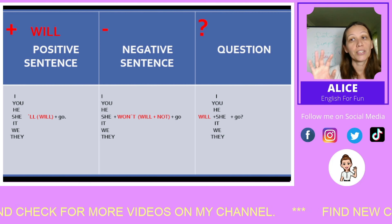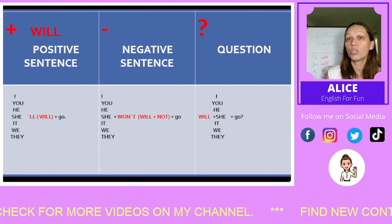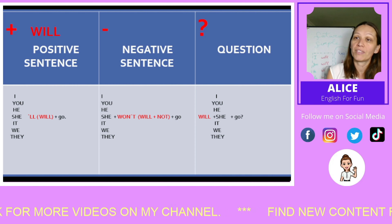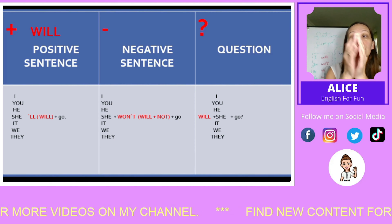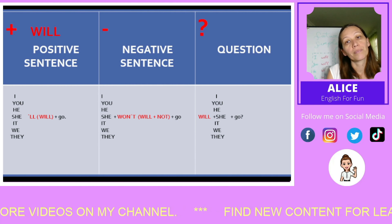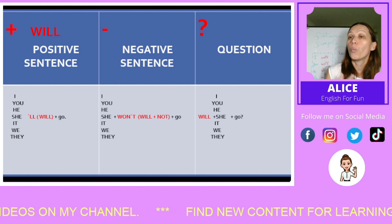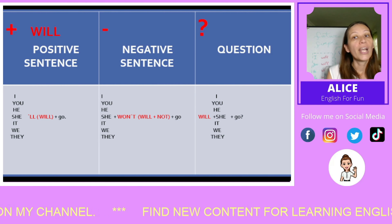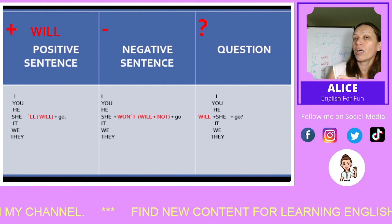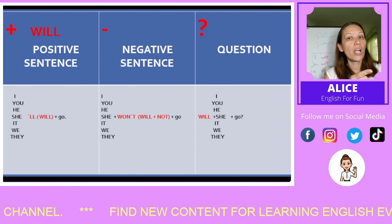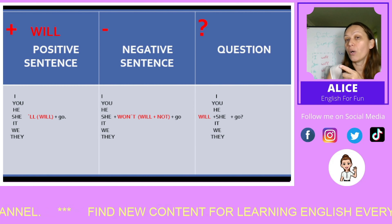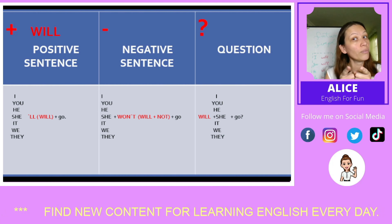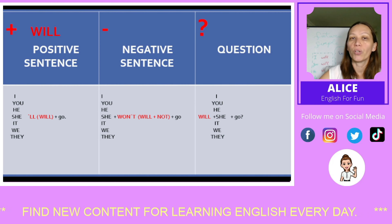To make a question, it's very easy as well. We just need to move the auxiliary verb 'will' to the beginning of the sentence. So it will be: will, subject, plus verb. Let's try it. Will I go? Will you go? Will he go? Will she go? Will it go? Will we go? Will they go? Excellent. Let's move on.